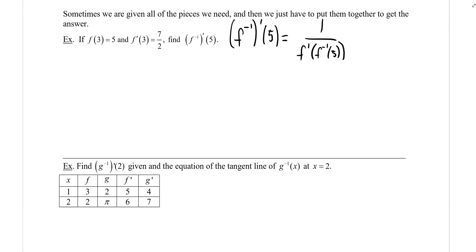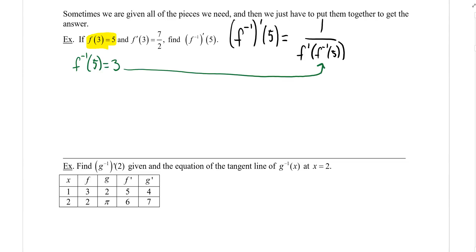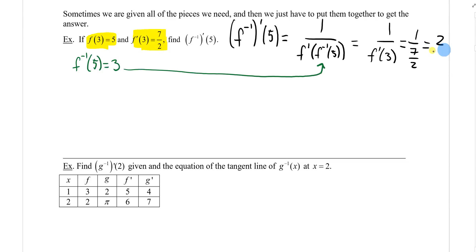I don't have a function to work with, just the value of the function. But if f of three equals five, then f inverse of five equals three, by definition — x and y are just flipped. Substituting: one over f prime of three. And since f prime of three equals seven-halves, the answer is one over seven-halves, which equals two over seven.